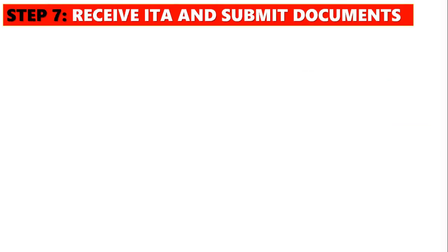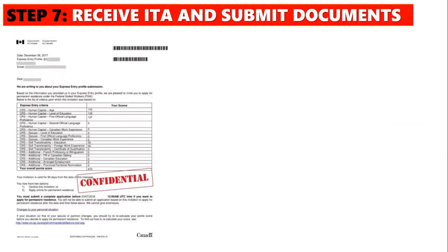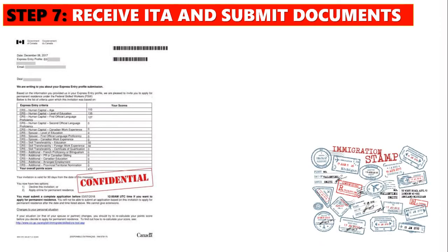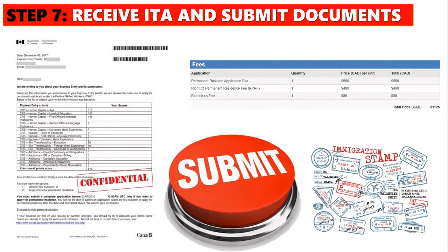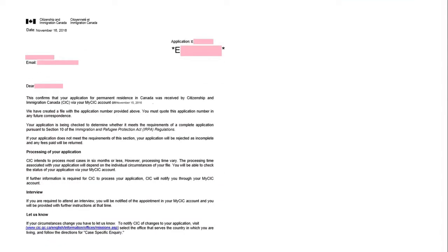The seventh stage is when you receive your ITA. At this stage you have to upload all the documents mentioned above. They will ask you about your past residences and travel history for the last 10 years, so make sure to provide these details as accurately as you can. Then pay the application fee of $1,125 CAD and submit all the documents.